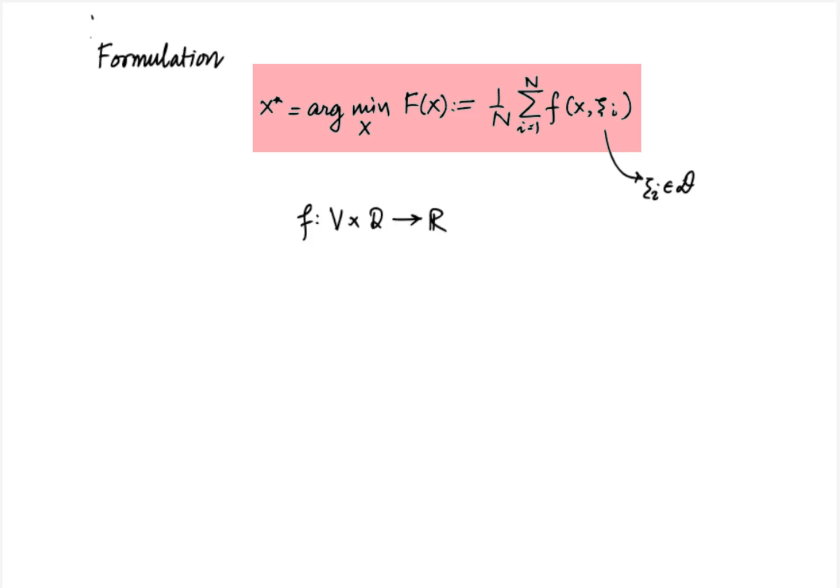We can solve it using the gradient descent method whose updates take the form x t plus 1 equal to x t minus eta over n summation from i equal to 1 to n gradient of f of x t comma xi i.